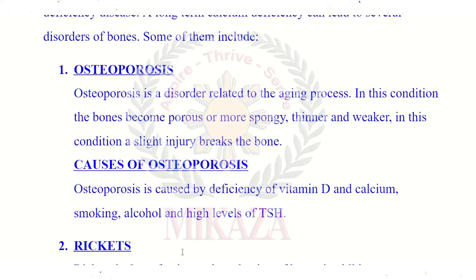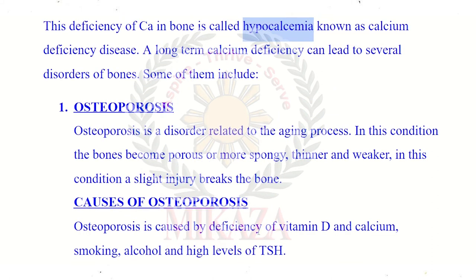Causes of osteoporosis: osteoporosis is caused by deficiency of vitamin D and calcium. Smoking and alcohol also cause it. High levels of TSH — thyroid stimulating hormone — if the body produces high levels of TSH, that also causes osteoporosis. If vitamin D and calcium are reduced in the body, that leads to osteoporosis.